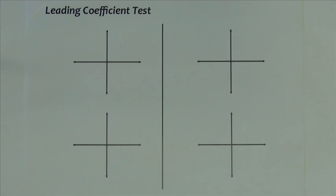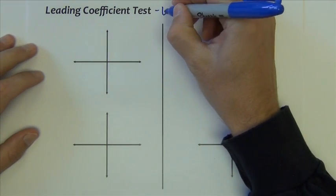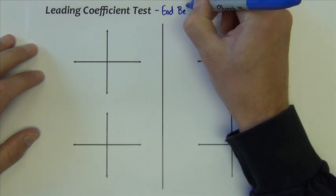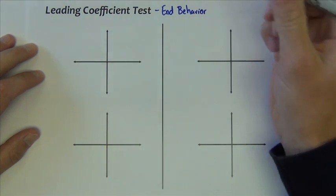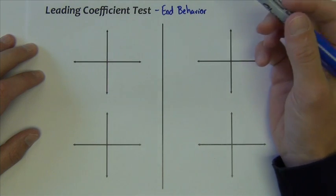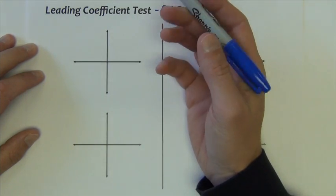We'll begin with what we call the leading coefficient test. This test gives us a way to determine the end behavior of a polynomial function just by looking at its leading coefficient. That's all.